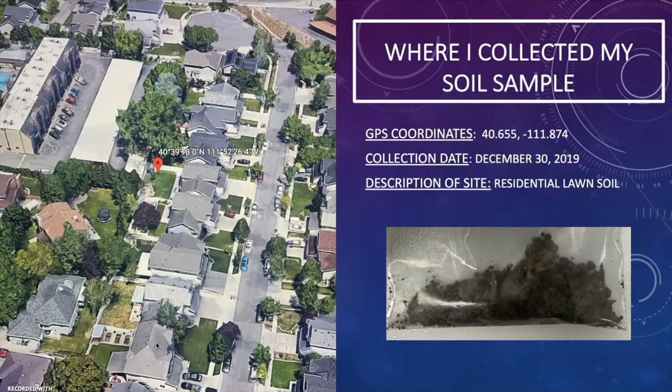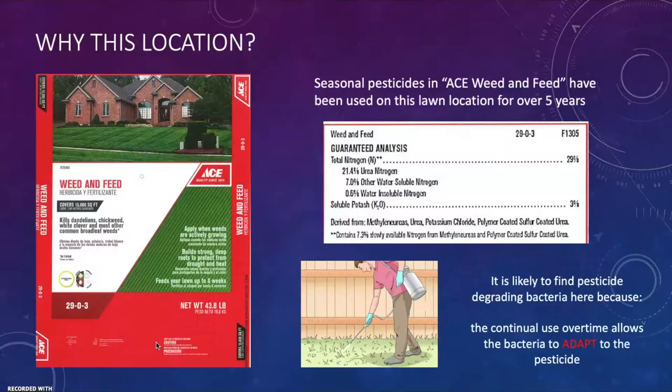This location was picked because seasonal pesticides have been used on this lawn for over five years consistently. The pesticide is known as Ace Weed and Feed and the pesticide analysis is printed on the label. It is likely to find pesticide-degrading bacteria in this location because of the continual use of this pesticide, and the bacteria that live here have likely adapted to it and could possibly degrade it themselves.